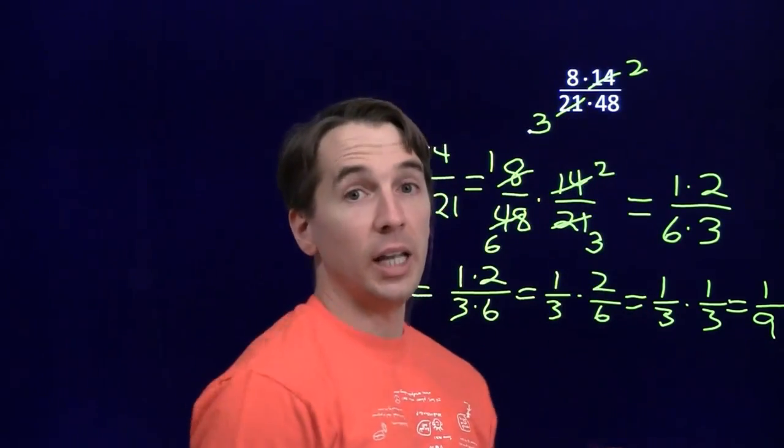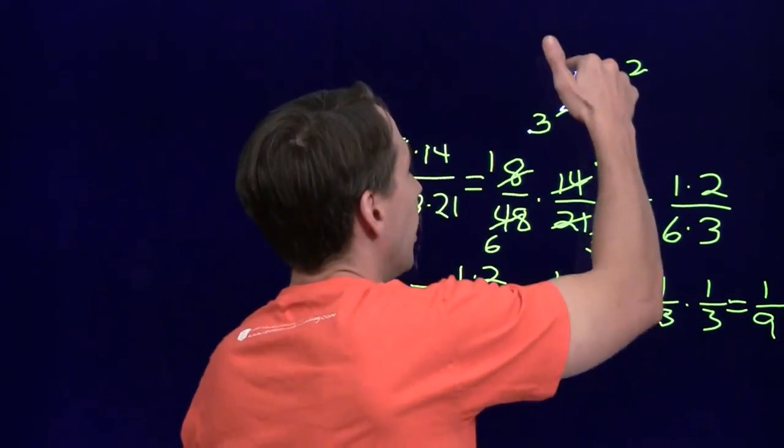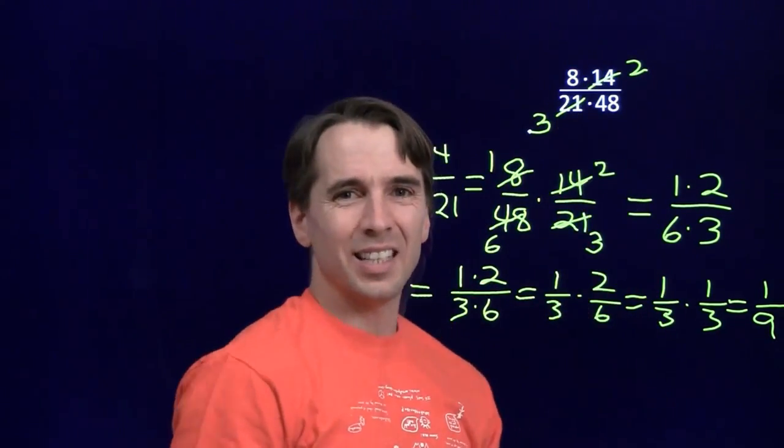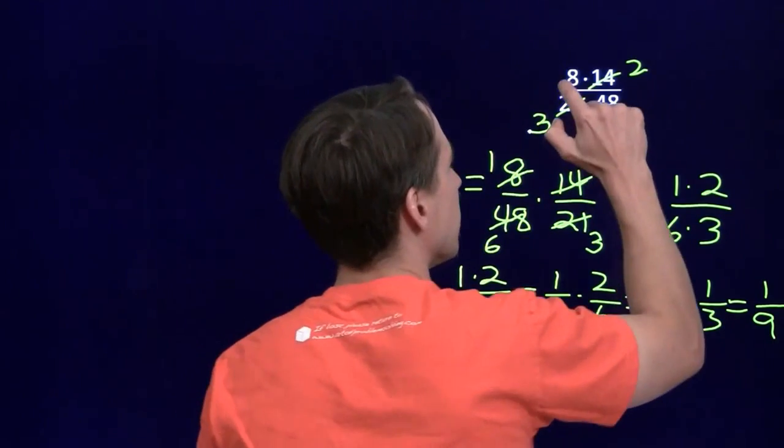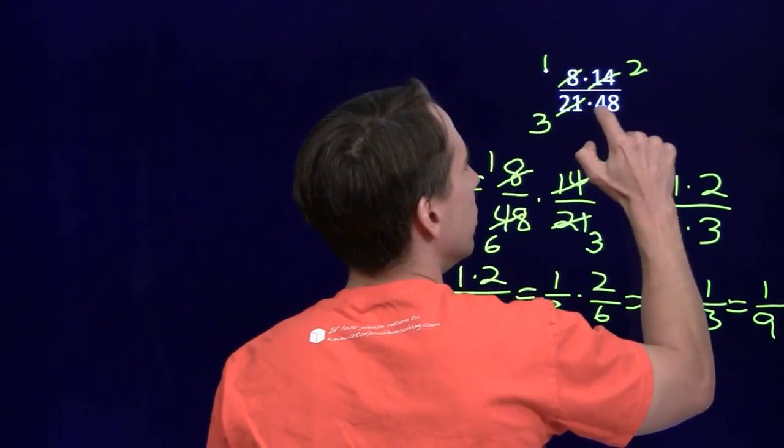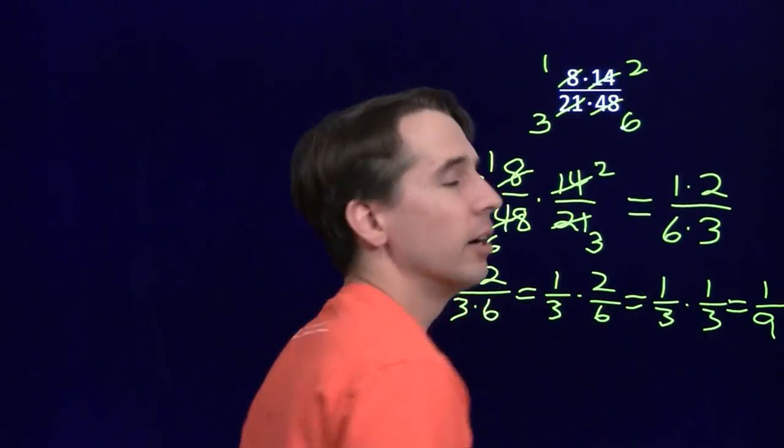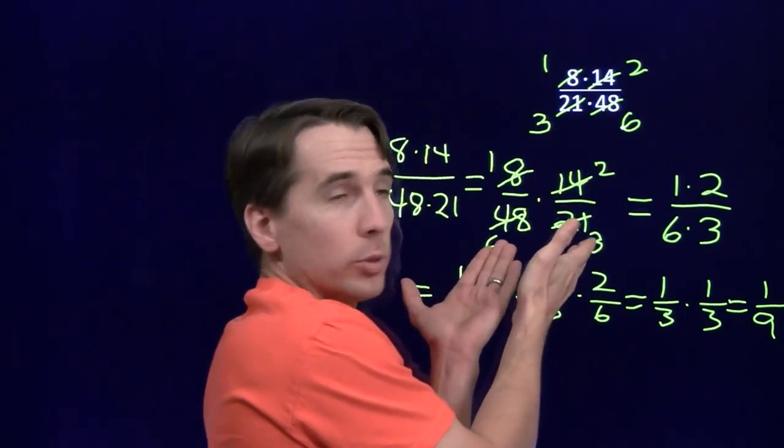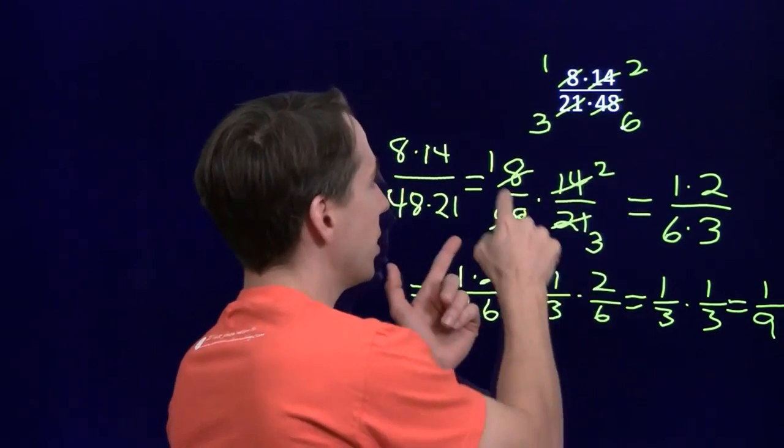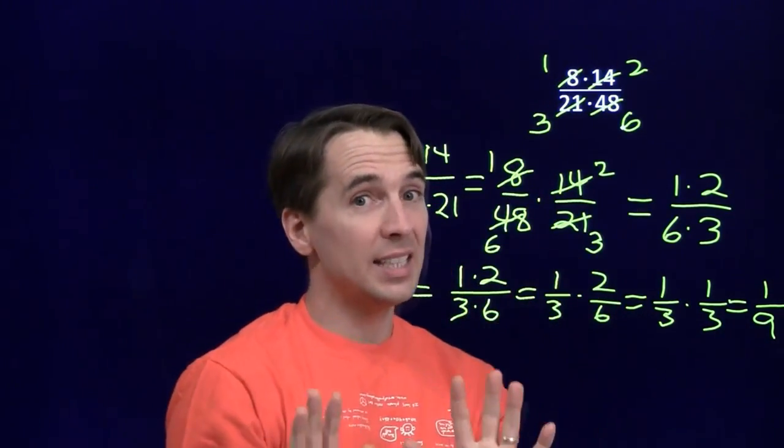You'll cancel out the 7s. You'll leave a 2 in the numerator and a 3 in the denominator. You'll see the 8. You'll see the 48. You'll say, hey, those are both multiples of 8. That's 1 times 8. That's 6 times 8. I'm going to cancel out those 8s. I'm going to leave a 1 in the numerator and a 6 in the denominator. Now, notice this is just the same thing as what we're doing down here. 1 times 2, 3 times 6.